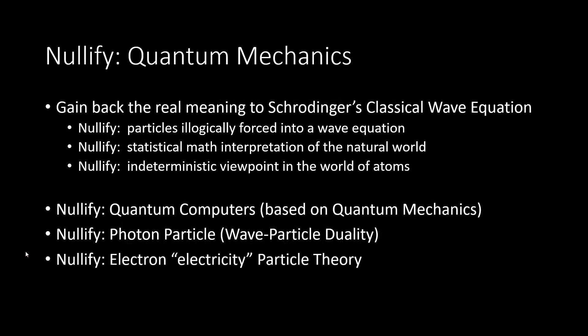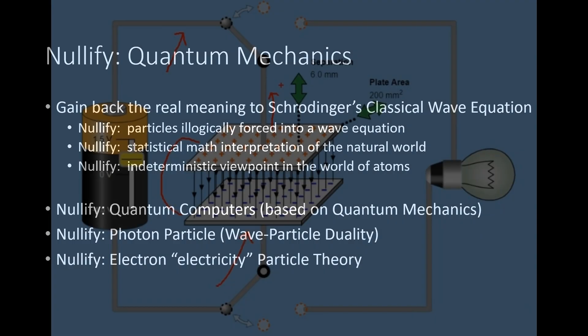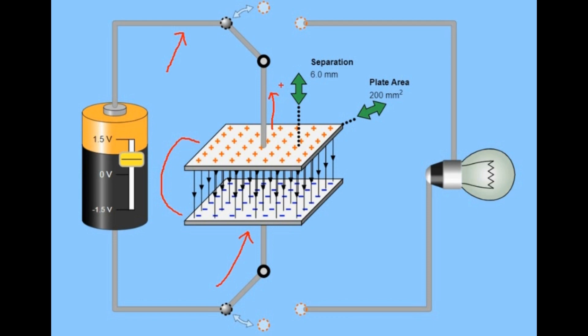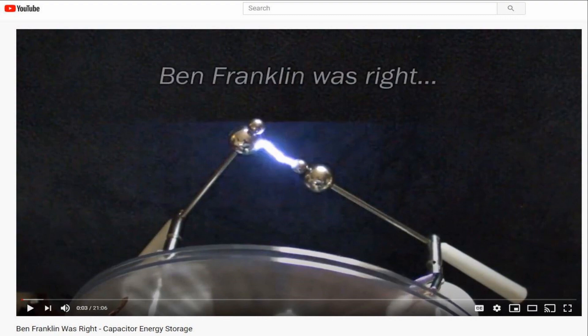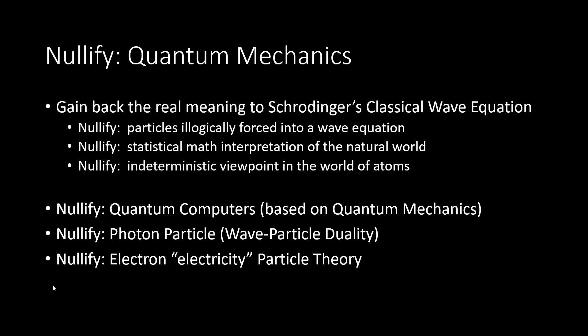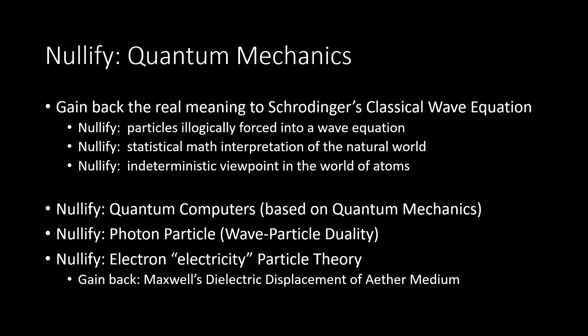Finally, the electron particle as it applies to electron theory of electricity. The problem with electron theory is it cannot properly describe how a capacitor works. Modern physics says that the electrons on the plates of the capacitor do all the work — they create an electric field that polarizes the dielectric or plastic piece in the capacitor. This can't be true because in a dissectable capacitor, you can remove that plastic piece and discharge it without being in the field supposedly created by the electrons. So if the charge is stored in the dielectric of a capacitor, you gain back an interesting idea: Maxwell's dielectric displacement of the ether. Think about a capacitor that uses the vacuum as a dielectric.